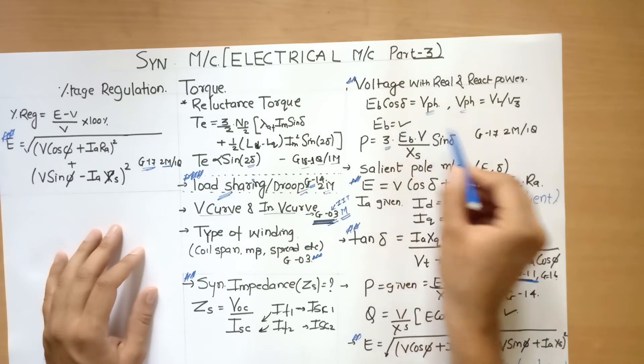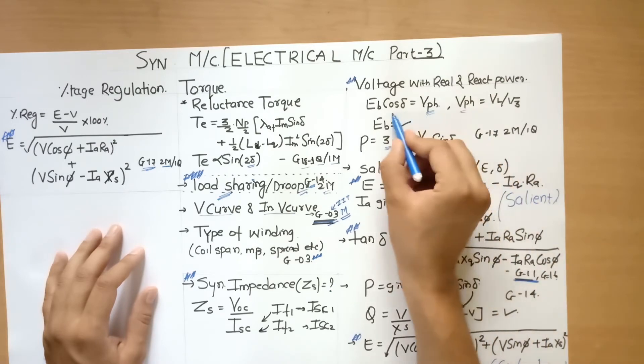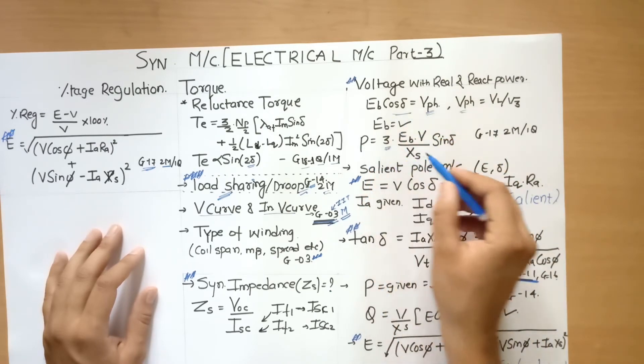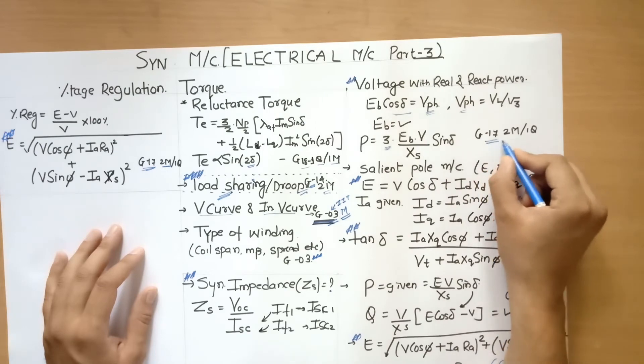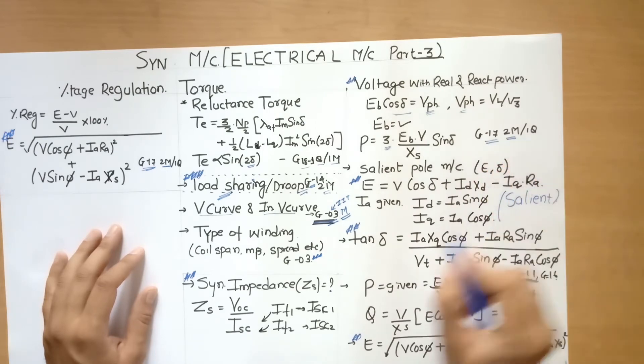You will need to find out Eb based on this situation, and then you have to find out the power. This was asked in gate 2017 for two marks, one question.